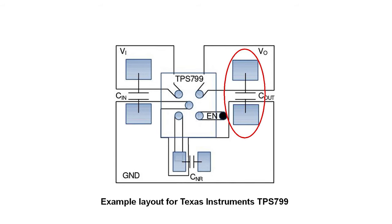A blind via connects an external layer to an internal layer, and a buried via connects two internal layers. However, blind and buried vias have very strict limitations on which layers they can connect. It's all too easy to use a blind or buried via that can't actually be manufactured or even prototyped. To understand the limitations, you must understand how the layers are stacked to make the PCB. Even if you use them correctly, blind and buried vias drastically increase the cost of prototype boards — many times their use will double your board cost initially, although this cost increase becomes less significant at higher production volumes. In almost all cases, it's best to avoid buried and blind vias unless you absolutely must have the smallest PCB design possible.